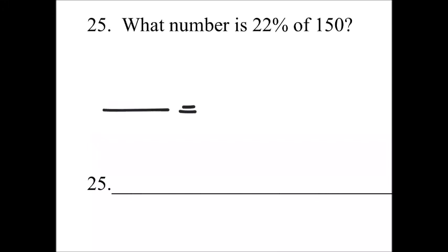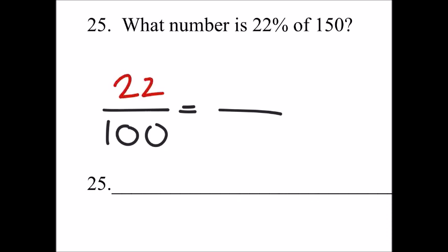We're going to set up a percent proportion. We always have our 100. 22 is the percent, which is above the 100. It's of 150, so that number is our whole value, because it's after the word 'of.' We'll be solving for x right here. So we use cross multiplication: 22 times 150.